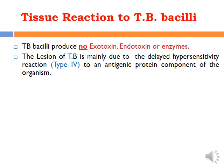Regarding the tissue reaction — how TB bacilli cause damage — TB bacilli by themselves produce no toxins or enzymes like other bacteria such as Staphylococcus aureus. The main damage in TB is produced by the human immune reaction to the bacilli, which is a type IV hypersensitivity reaction with formation of granuloma.